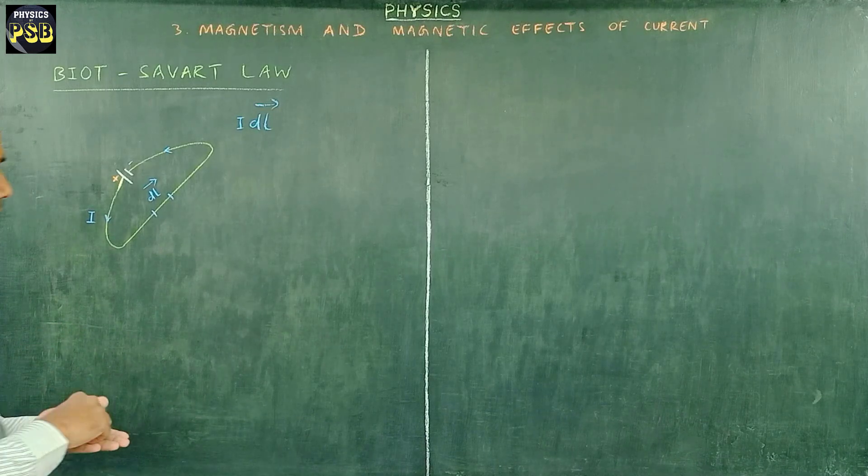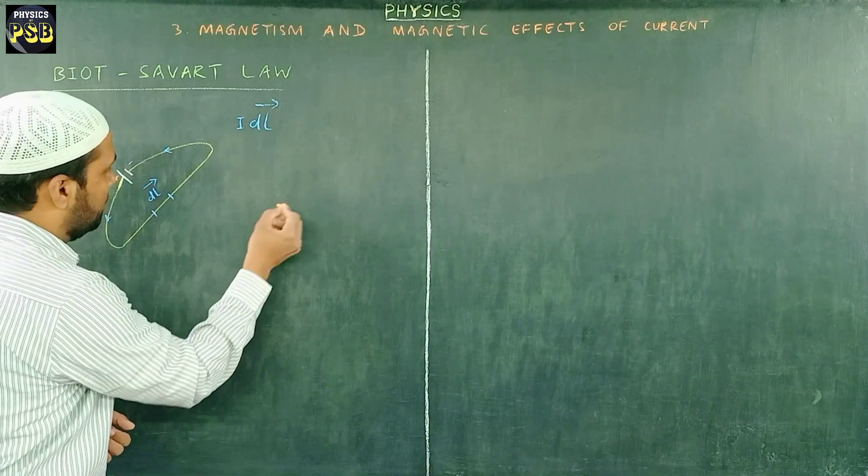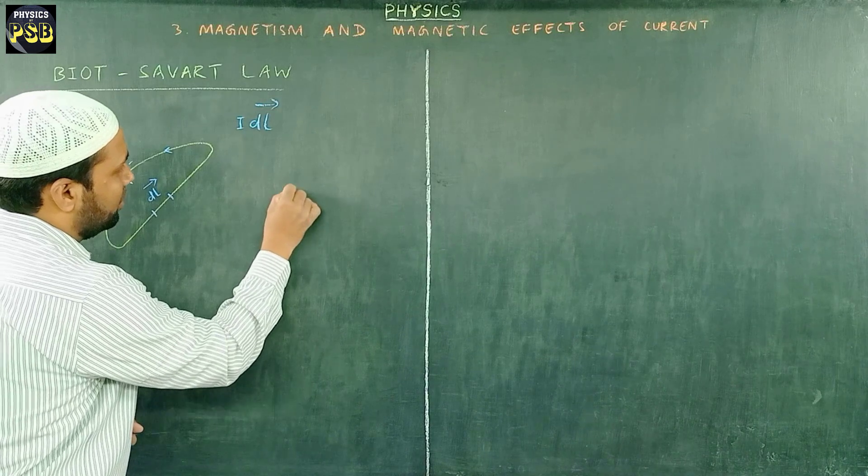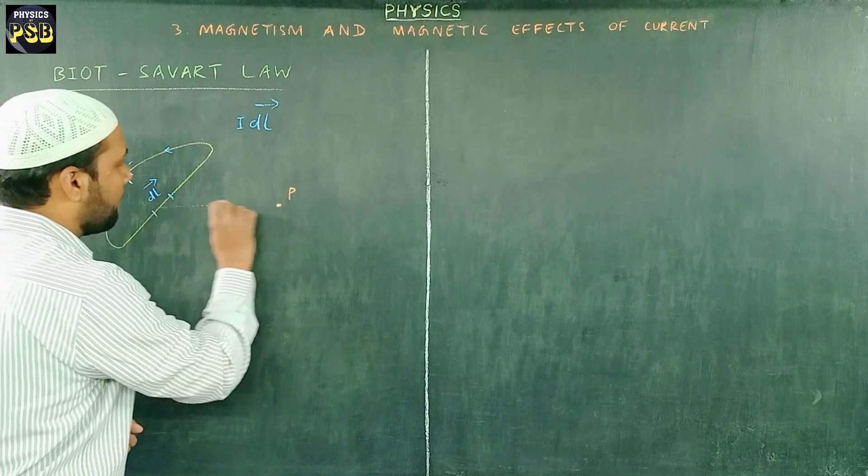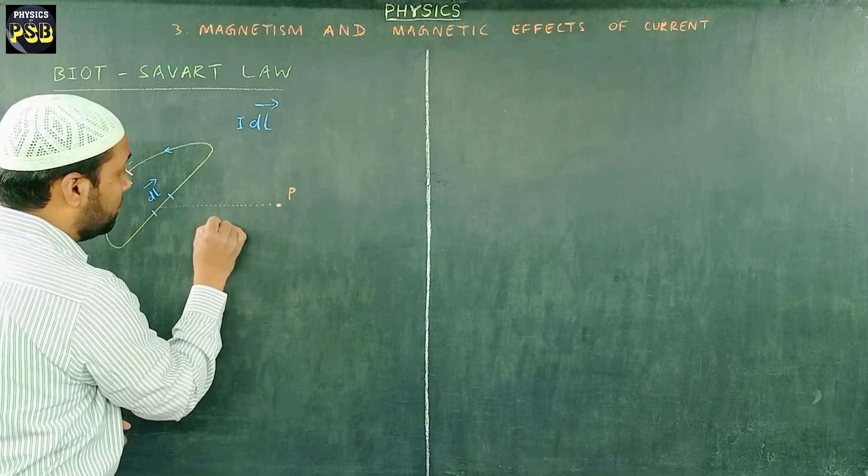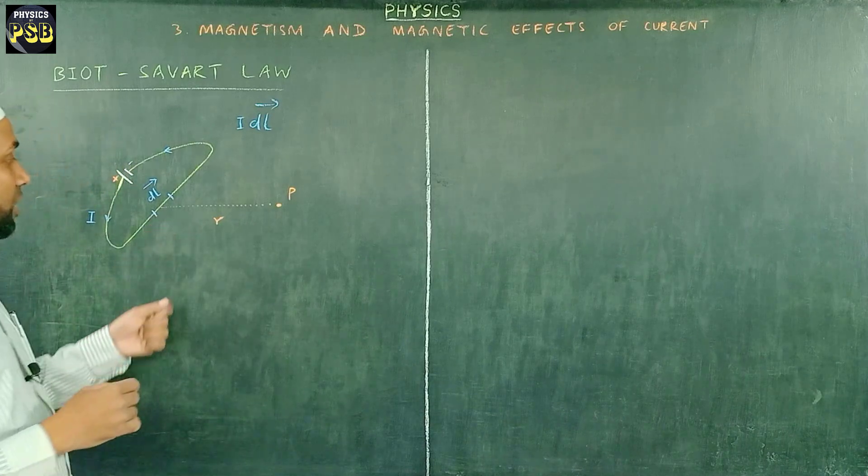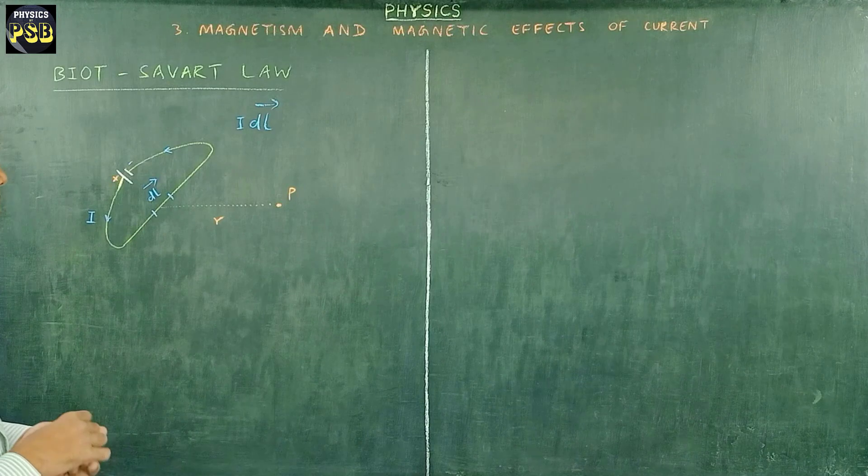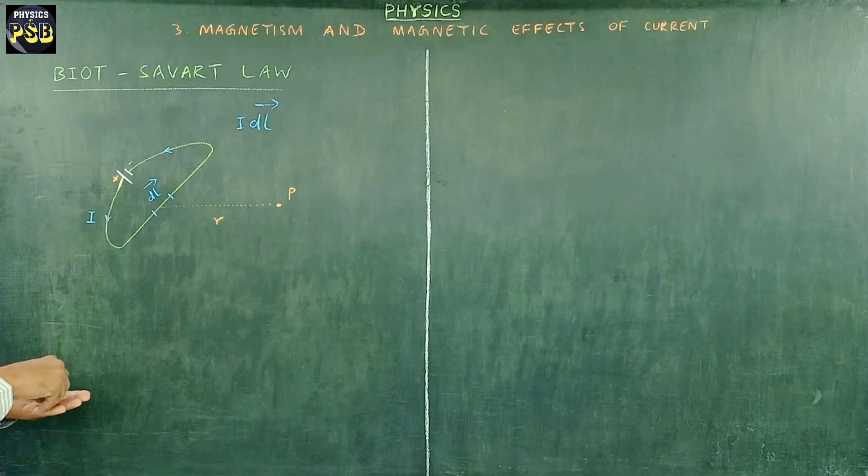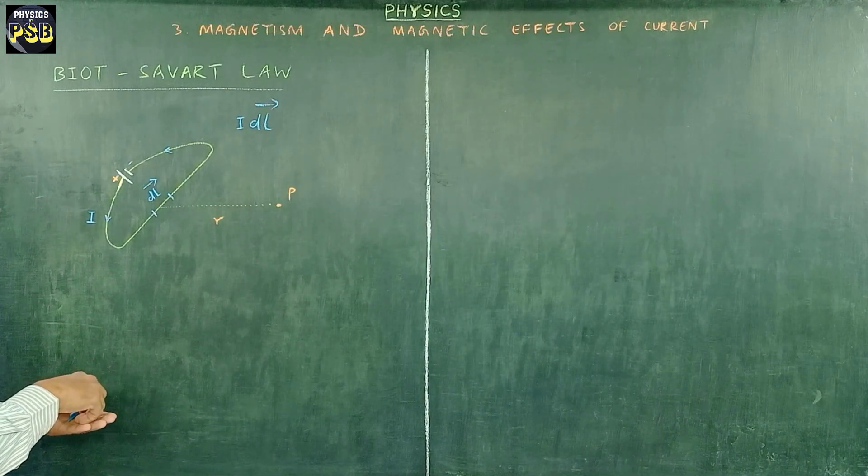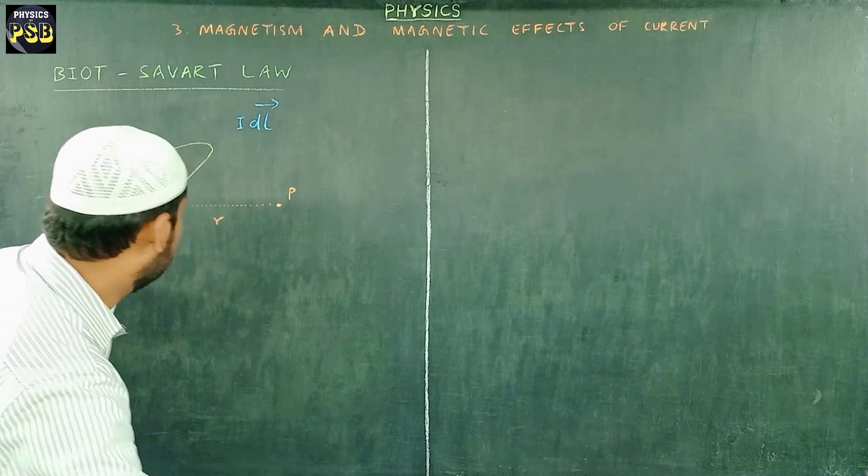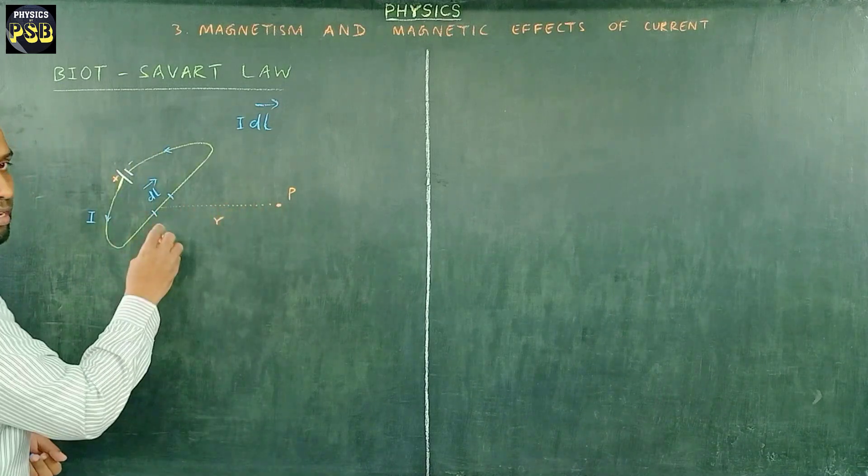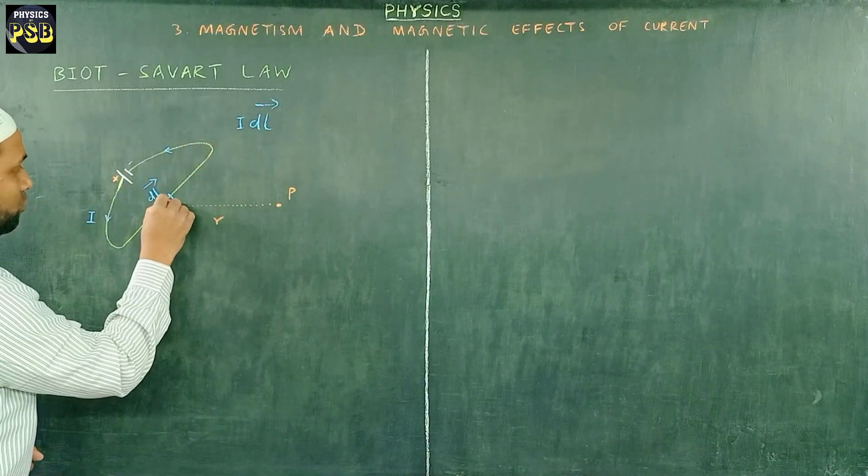Now I take a point P at some distance r from this current element. The angle between this line and the current element is found to be theta.